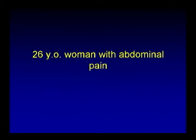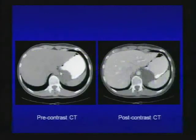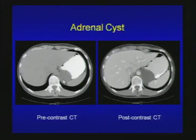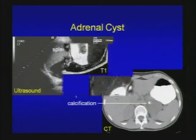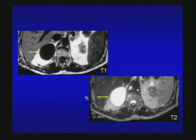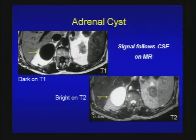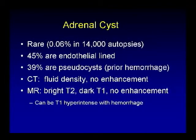Our next case is a 26-year-old woman with abdominal pain. Pre-contrast and post-contrast CT shows a fluid-density left adrenal mass — typical for an adrenal cyst. Another case on ultrasound: cystic adrenal mass with internal echogenicity that looks like calcification, confirmed by CT — another case of adrenal cyst. Adrenal cysts are very rare; 45% are endothelial-lined and 39% are pseudocysts from hemorrhage, and frequently those are the ones with calcification.